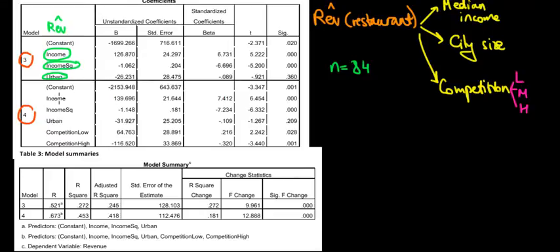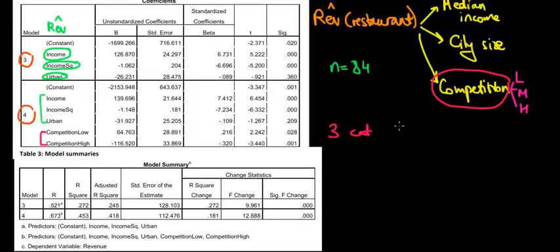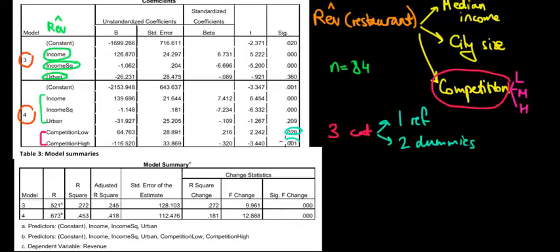In Model 4 we have the same three variables but we add two more: dummy variables for competition. Competition has three categories — low, medium, and high — but in the model we include only two dummies. Why? Because when we have three categories, we need one reference category and two dummies. We compare the effects of the dummies relative to that reference category.